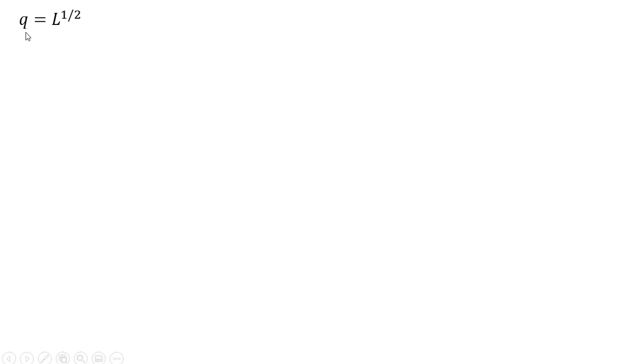So here's a production function, one input, L is units of labor, Q is the quantity of output, and we're going to just maximize profit.